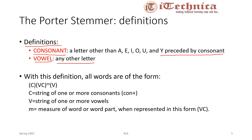With this definition, all words in the Porter Stemmer are of the form [C](VC)^m[V], where C denotes a string of one or more consonants, V denotes a string of one or more vowels, and VC denotes the combination of vowels and consonants. C and V in brackets represent arbitrary values. The term m denotes the measure of a word or word part.